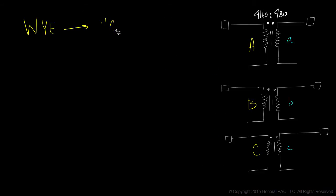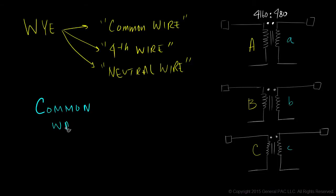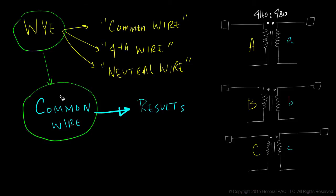The Y-connected transformer is distinguished by a common wire, which is also referred to as a fourth wire or a neutral wire. This common wire can be connected in various ways to achieve very specific results. The white connection is almost always found with a common wire connected to the non-polarity side of the windings. This is how we'll configure our transformer in this example.